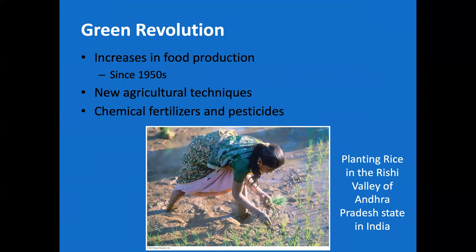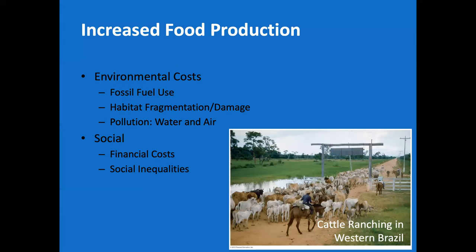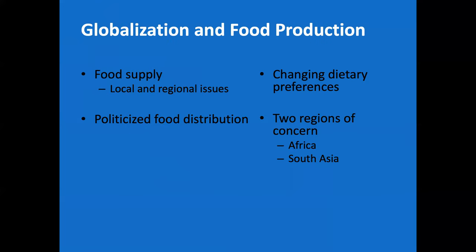We'll talk about the green revolution — agricultural techniques and the use of fertilizers and pesticides, and how that's led to environmental problems but also increased productivity in food production. And that is lesson two.